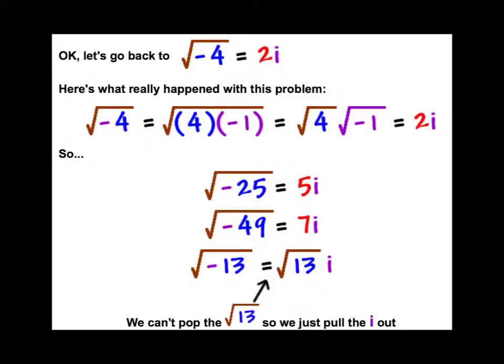So we're going back now to the square root of negative 4 is 2i. So here's what really happened. We take apart the 4 and the negative 1, and we separate it. Find the square root of 4, that's 2. Find the square root of negative 1, that's i. So if I want to find the square root of negative 25, 5i. Negative 49, 7i. Negative 13, root 13i. Just make sure that little roof doesn't go over top of the i. Sometimes they put the i in the front. Sometimes they put it in the back. Technically, it's supposed to go in the back. And of course, we can't just pop that 13 out because we can't find the square root of 13. We have to leave it a radical.